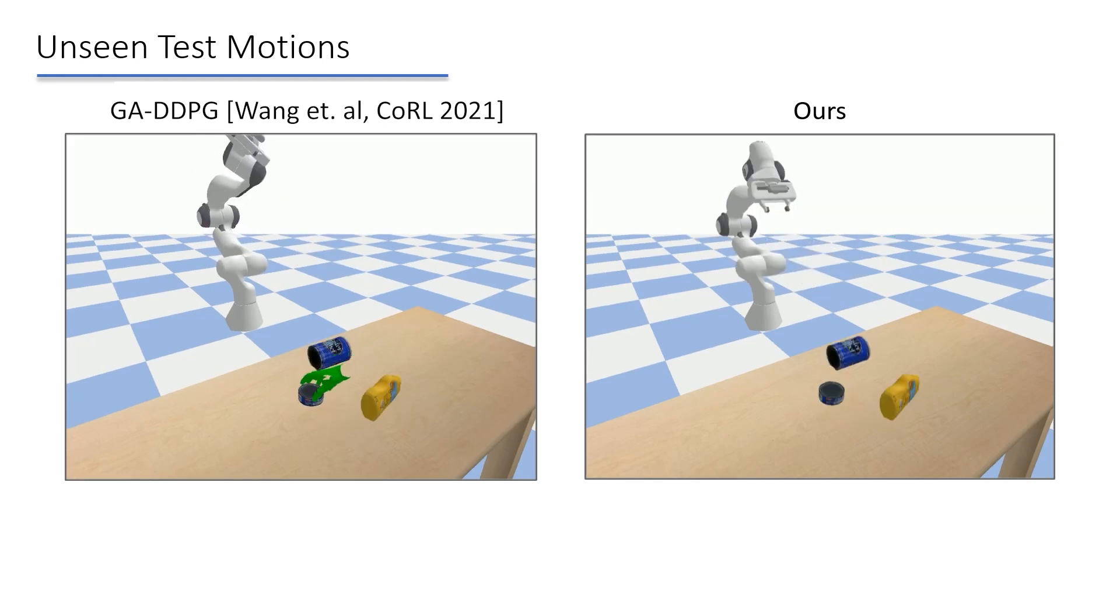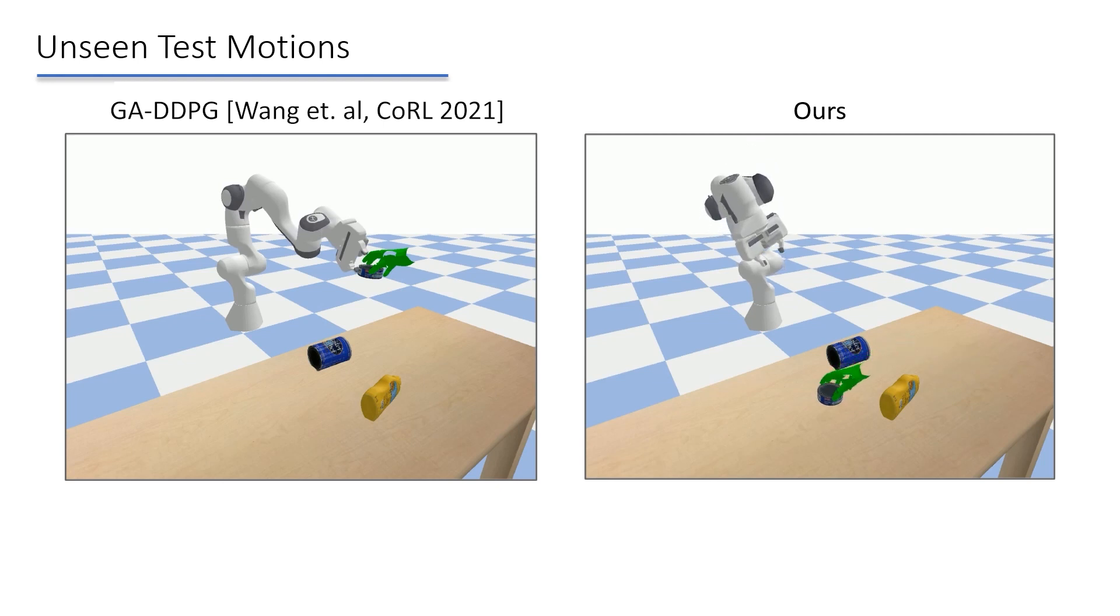The baseline often tries to grasp the object in the most direct path. In our method, the robot gets close to the object. Then, it adjusts its end effector into a good pre-grasp pose from where the object can be grasped safely.